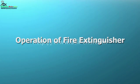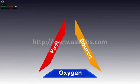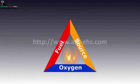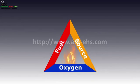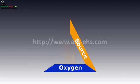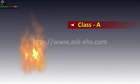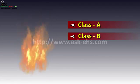Operation of fire extinguisher. There are three main reasons for fire: fuel, oxygen, and source of ignition. By removing any one of these — fuel or oxygen — we can stop the fire.